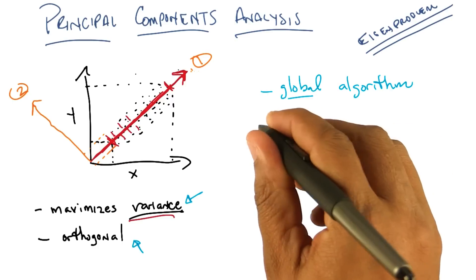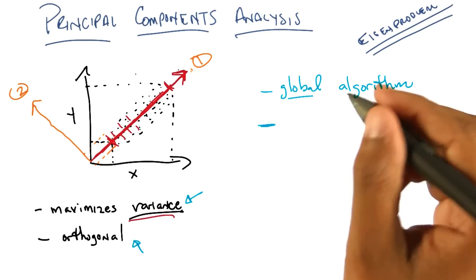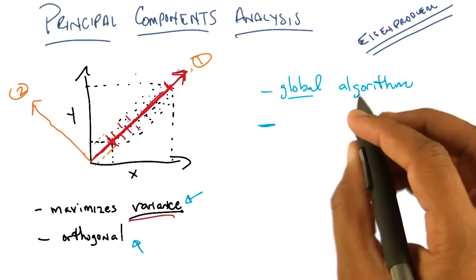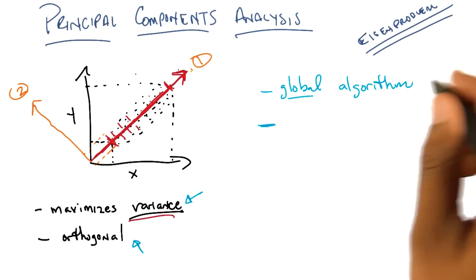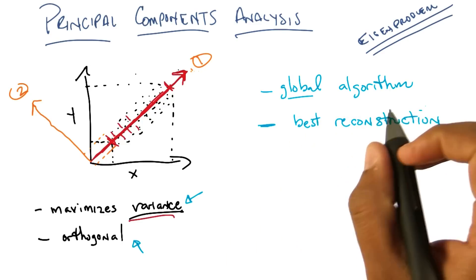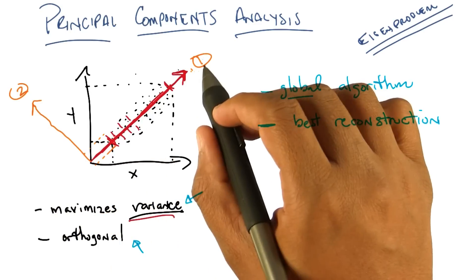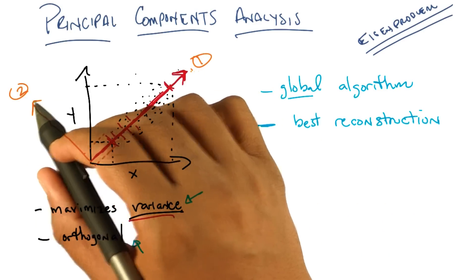It also turns out that you can prove, which I will try to give you a little bit of evidence for, but I'm not going to prove formally, that the PCA actually gives you the best reconstruction. Now, what do I mean by best reconstruction? Well, what I mean is, if you think of each of these directions that it found. In this case, it found this one first and found this one second.